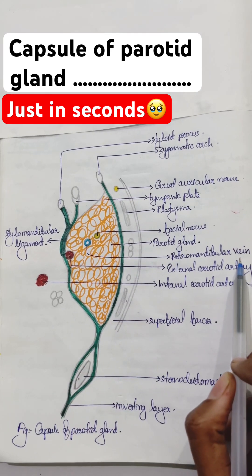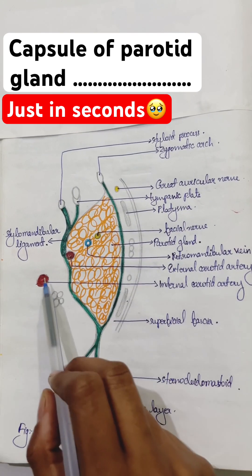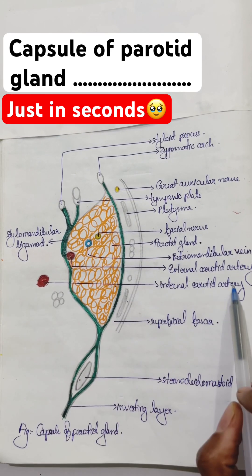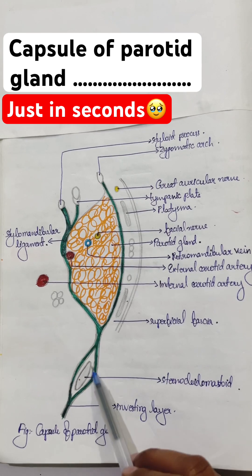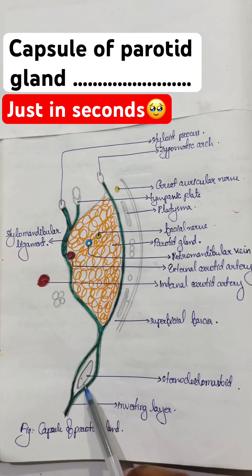Then the retromandibular vein, external carotid artery, internal carotid artery, and here is the sternocleidomastoid muscle — important structures to keep in mind. Thank you for watching.